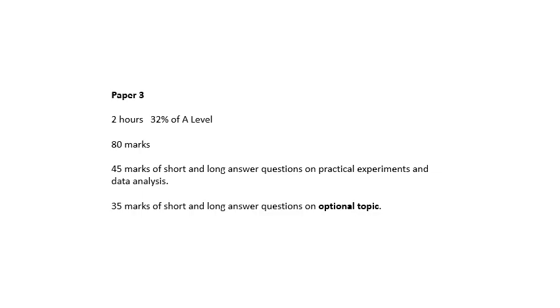Paper three is two hours long, 32% of the A-level, pretty much the same as the other two papers. You'll get lots of questions on practical experiments and data analysis. But then 35 marks of the 80 marks will be on the optional topic, in this case, astrophysics. So this comes up on paper three.